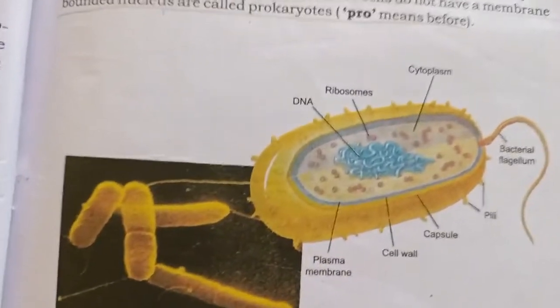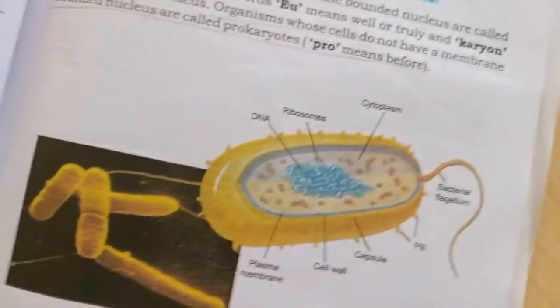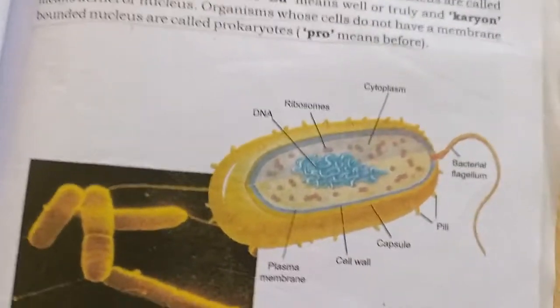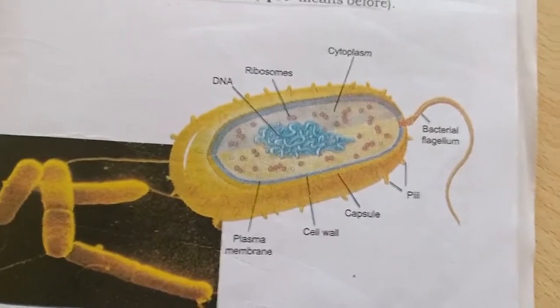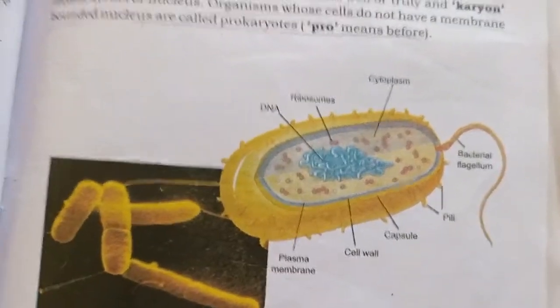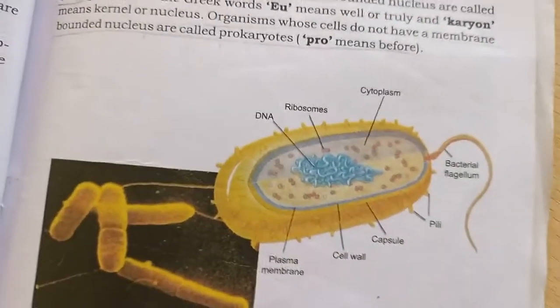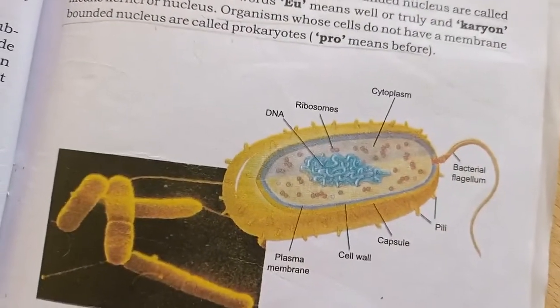For homework: copy, read, understand, and submit. Question number two: draw a neat and labeled diagram of a bacterial cell, page number 59. These are the two homework questions. Copy, read, understand, and submit. This is the end of our session. Allah Hafiz, take care.